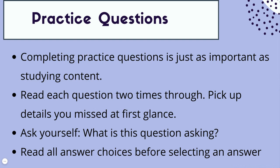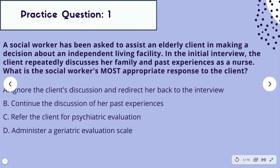Let's jump into our first practice question. A social worker has been asked to assist an elderly client in making a decision about an independent living facility. In the initial interview, the client repeatedly discusses her family and past experiences as a nurse. What is the social worker's most appropriate response to the client? Answer choices: A, ignore the client's discussion and redirect her back to the interview. B, continue the discussion of her past experiences. C, refer the client for a psychiatric evaluation. Or D, administer a geriatric evaluation scale.